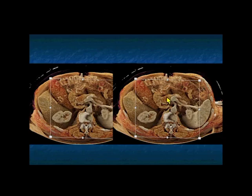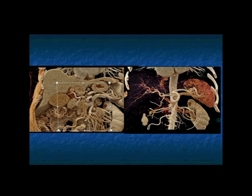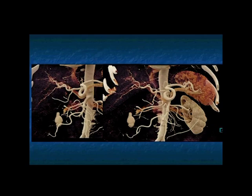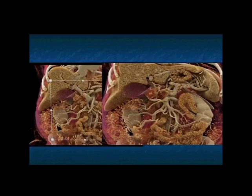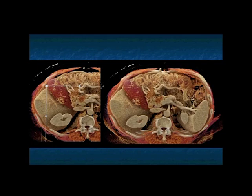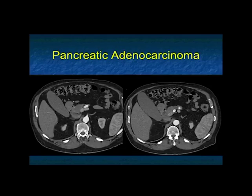The cinematic rendering nicely shows the pancreatic mass. It shows GDA involvement with the celiac, SMA, and hepatic all looking good. Staging is one of the important things we do after lesion detection — it's all about staging and working carefully with your medical and surgical oncologist. Pancreatic adenocarcinoma with GDA involvement, but the patient was resectable.